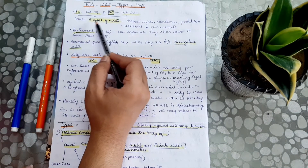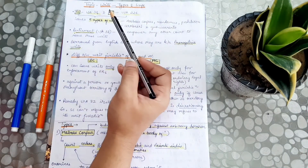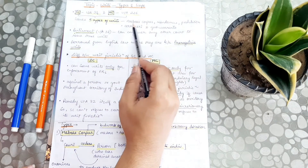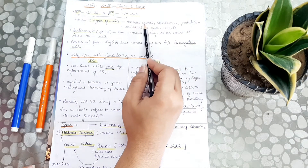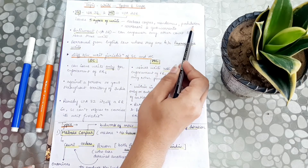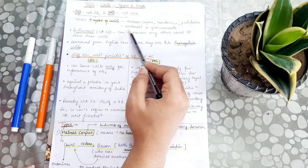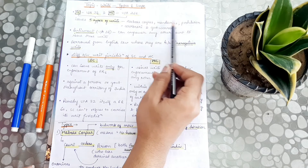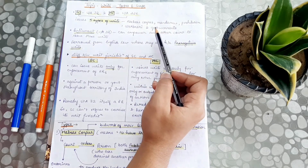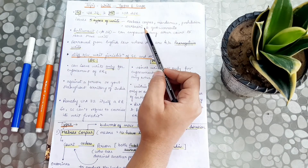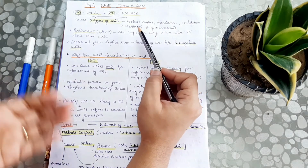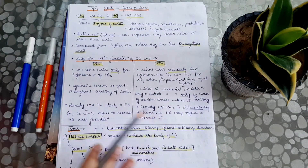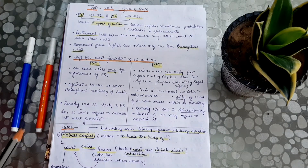There are 5 types of writs which the Supreme Court and High Court can issue. They are: Habeas Corpus, Mandamus, Prohibition, Certiorari, and Quo Warranto. These are all Latin terms. Now, we will see the meaning of these different writs.